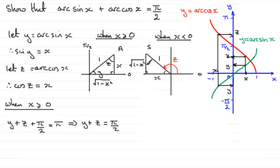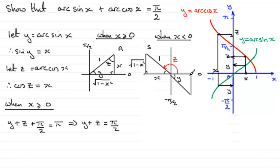Now let's look at y. When x is negative, y is going to be an angle between 0 and minus pi upon 2 — so an angle in the fourth quadrant. If I draw another triangle in the fourth quadrant, angle y is in there. We know that sine of y equals x, or x over 1, opposite over hypotenuse. So opposite would be x, the hypotenuse is 1, and this third side by Pythagoras' theorem is the square root of 1 minus x squared.